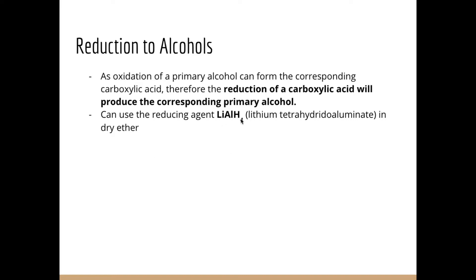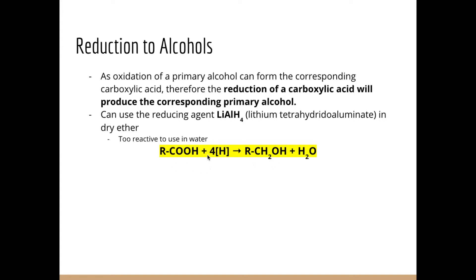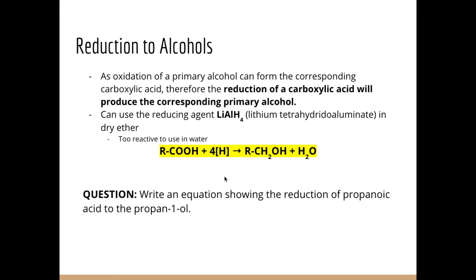We use this reducing agent in dry ether because it's very reactive and will react vigorously if used in water. Quite simply, we have the carboxylic acid, we add four molar equivalents of the reducing agent, and we convert back to the corresponding primary alcohol and then water. We're adding two hydrogens onto the original carboxylic acid molecule and two hydrogens on the water byproduct, so four equivalents are needed. Can you write an equation to show the reduction of propanoic acid to propanol? Pause and give it a go.